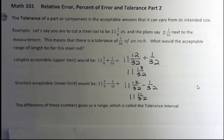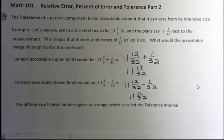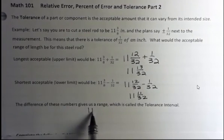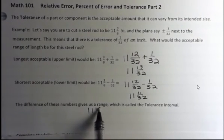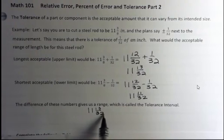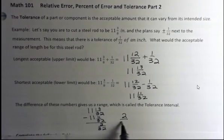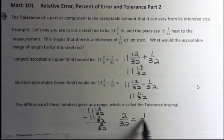The difference in these numbers gives us the range, which is called the tolerance interval. So those are the ranges of acceptable lengths. All we have to do is say 11 and 13/32nds, which was the upper limit, subtract 11 and 11/32nds, which is the lower limit, and 13 minus 11 is 2/32nds. However, we want to reduce 2/32nds because 2/32nds can be reduced to 1/16th.